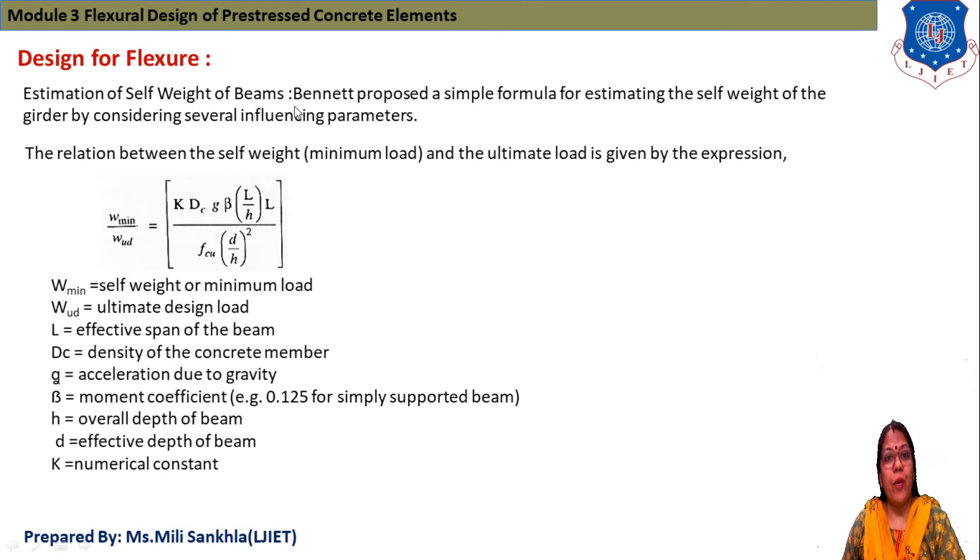Now we discuss the flexural design steps. One by one: estimation of self-weight of beam. Here we use the equation based on Binet theory. This theory provides a simple formula for estimating the self-weight of girder by considering several influencing parameters. The relation between self-weight and ultimate load is W_min / W_UD = K × DC × G × β × L/H × L / (FCU × D/H²).